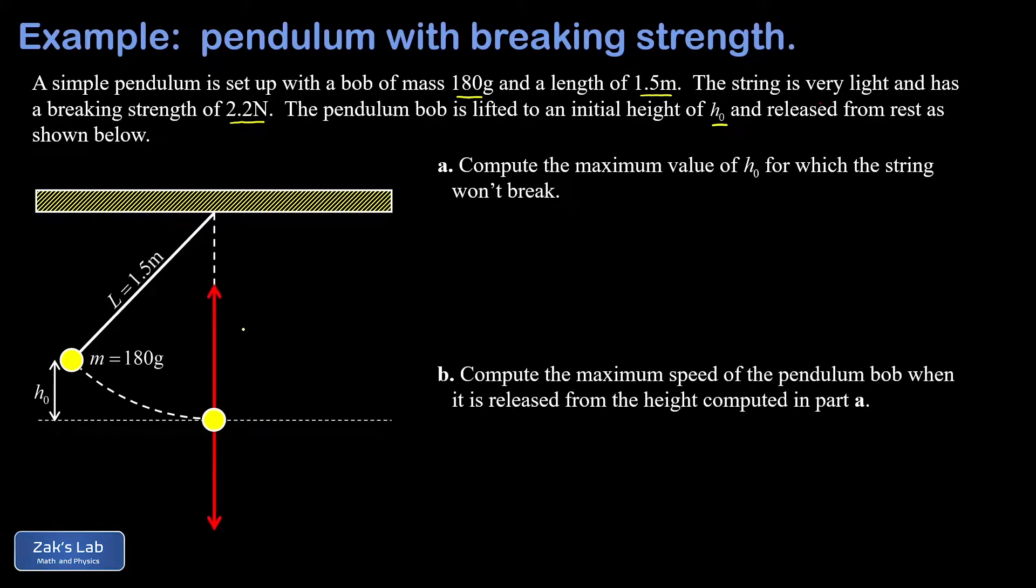So in our force diagram, we have one vector pointing up on the pendulum bob, and that's the tension in the string. And we have one vector pointing down, and that's the weight of the pendulum bob given by mg.